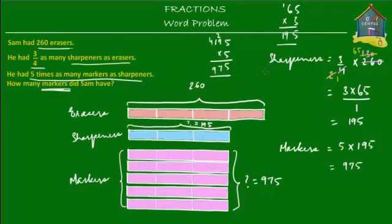Well, that's just one method of solving this problem. The other one is the units method, where you calculate how much the value of each unit is. We start from the erasers.